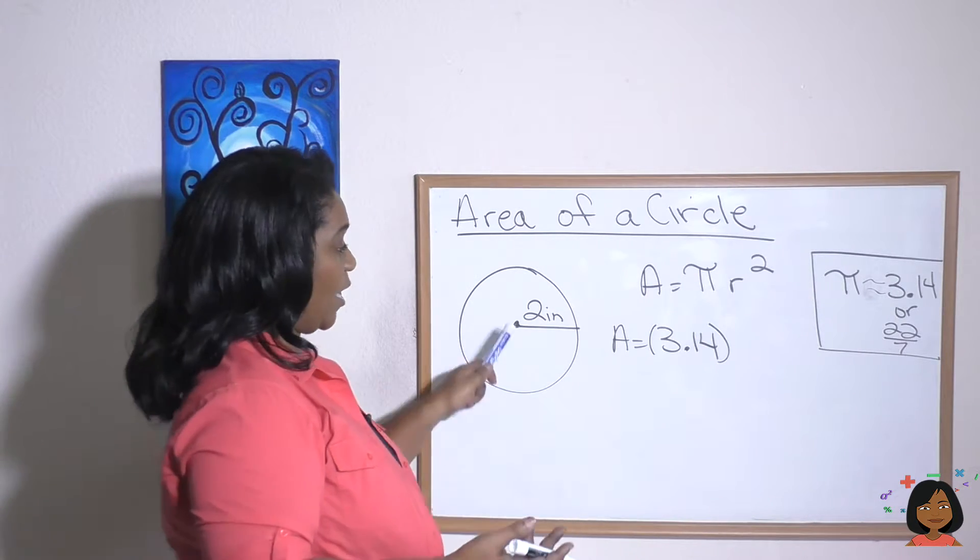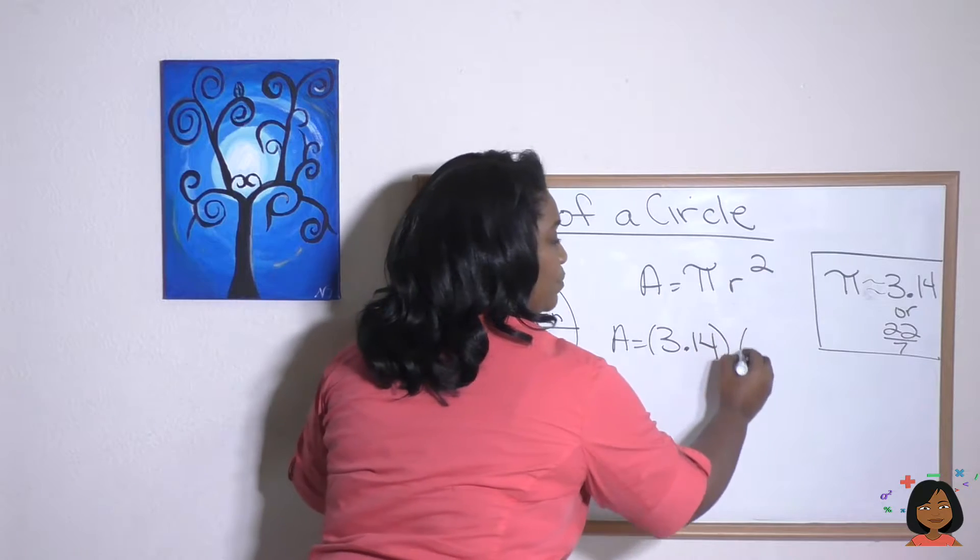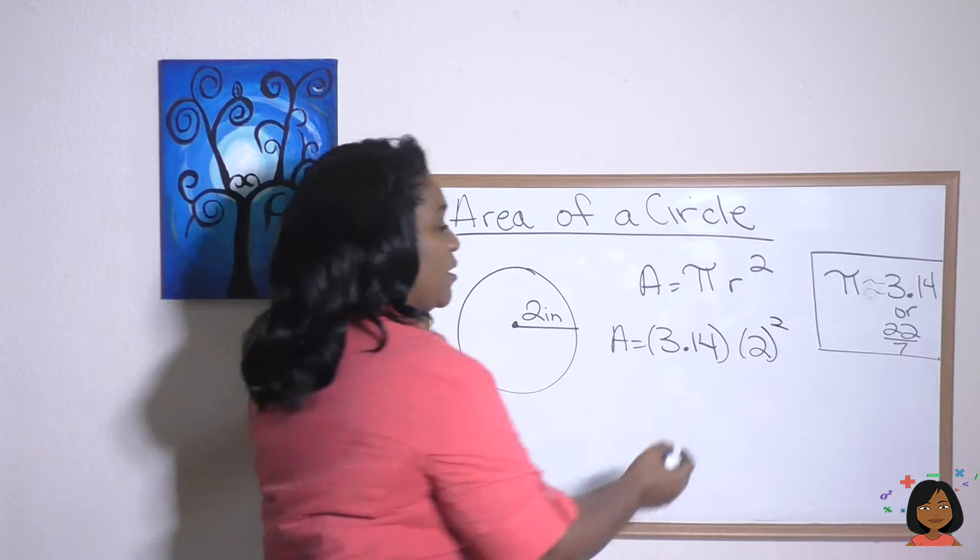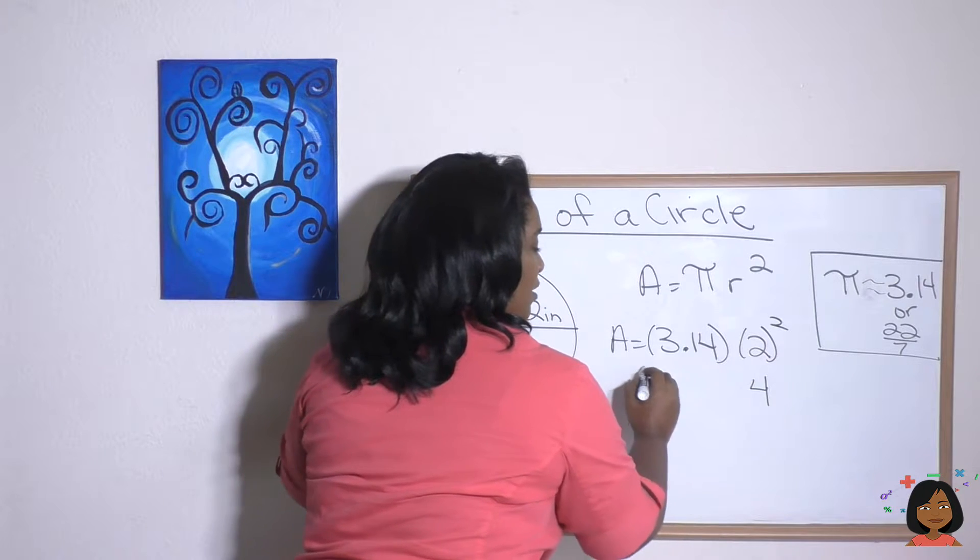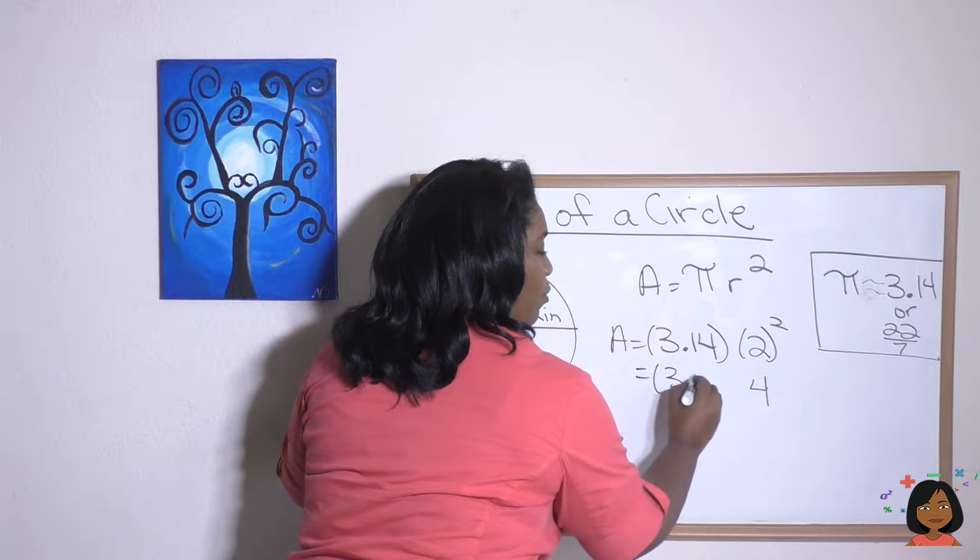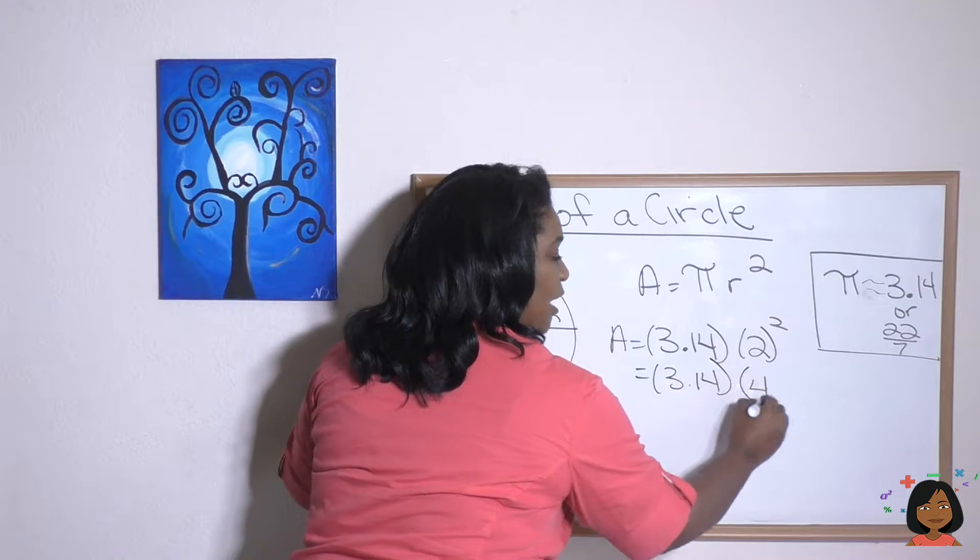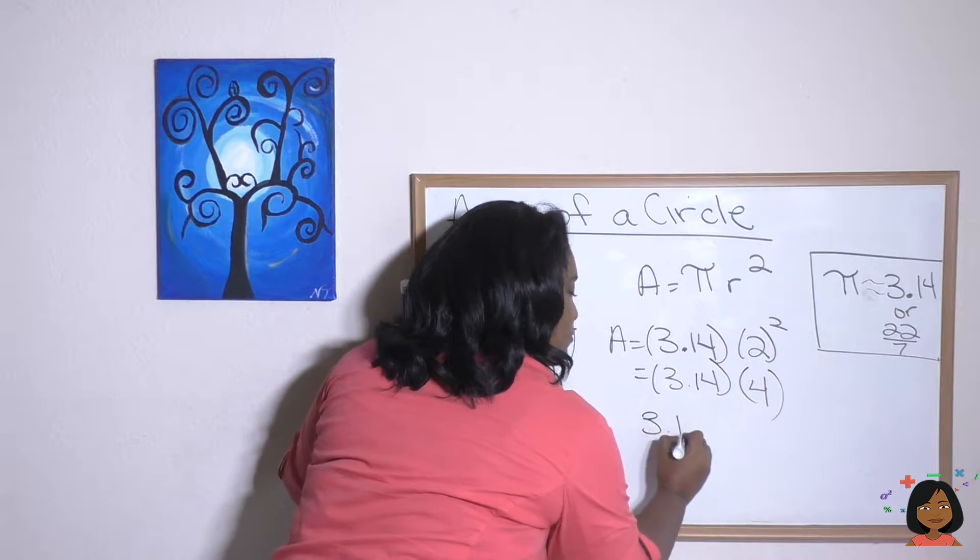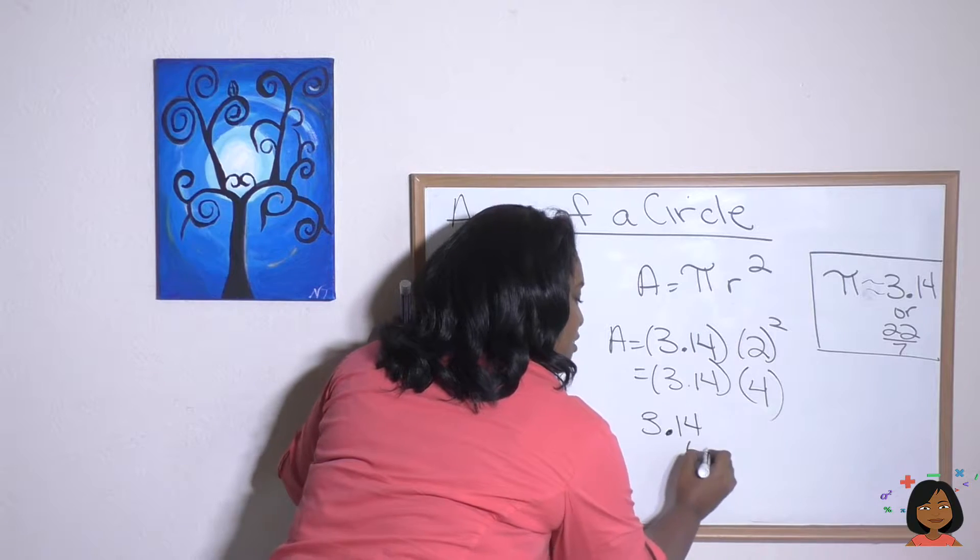And now radius squared. The radius is two, but we're going to square it. Two squared is four. So this is going to be 3.14 times four. And we can just do that as a multiplication problem.